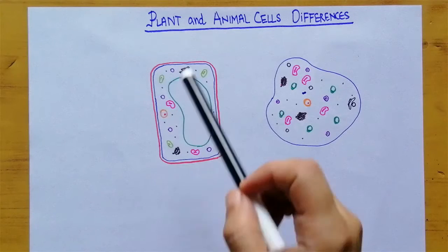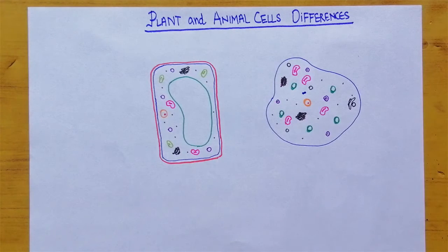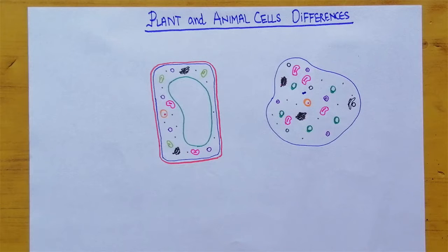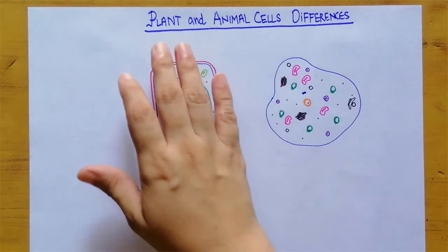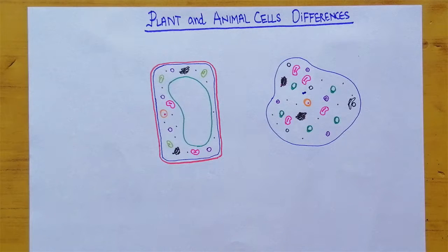Today we are going to study about the differences between plant and animal cells. All living organisms are made up of cells, and cells are the structural and functional unit of life. Although animal and plant cells are both eukaryotes in nature, there are many differences between both types of cells.